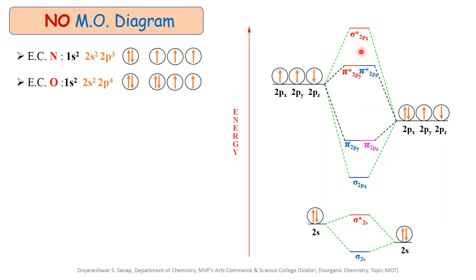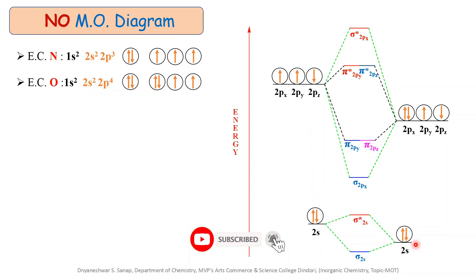From this molecular orbital diagram, we conclude that the atomic orbitals of oxygen are nearer to the bonding molecular orbitals, and the atomic orbitals of nitrogen are nearer to the anti-bonding molecular orbitals. This means the more electronegative atom (oxygen) contributes more to bonding formation, and the less electronegative atom (nitrogen) contributes more to the formation of anti-bonding molecular orbitals.